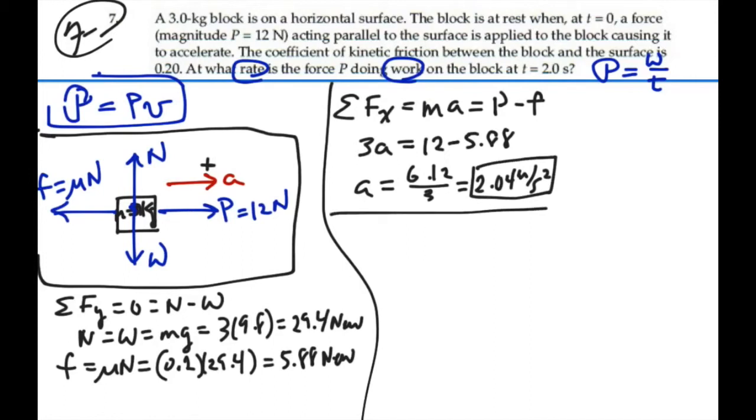We want to find the velocity, and we have a constant acceleration, so we can apply kinematics. We know that our final velocity will equal our initial velocity plus acceleration times time. In this case, our initial velocity is 0 because we started from rest. So this is going to be equal to 2.04 meters per second squared times 2 seconds, or 4.08 meters per second. That's our velocity.